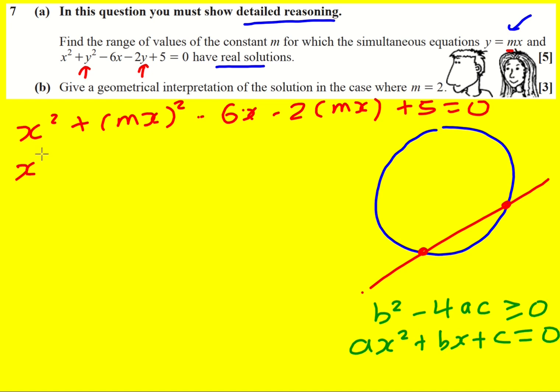Let's carry on then and expand this. x squared plus m squared x squared, then minus 6x minus 2mx plus 5 equals 0. Now I'm going to try and get it as ax squared. I'm going to factorize out the x squared, although I'm going to put it on the right. It's going to be m squared plus 1 times x squared.